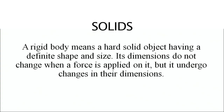What is an actual solid? A rigid body is a hard solid object having a definite shape and size. Its dimensions do not change when a force is applied on it, but it can undergo changes in dimension.